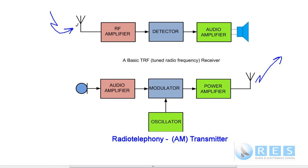Simply, the RF signal comes in, it is amplified, then the RF signal goes into the detector. The detector removes the audio from the RF signal that went into the microphone of the transmitter. At this point we've now got audio, so we amplify it with an audio amplifier and we listen to it in a loudspeaker.